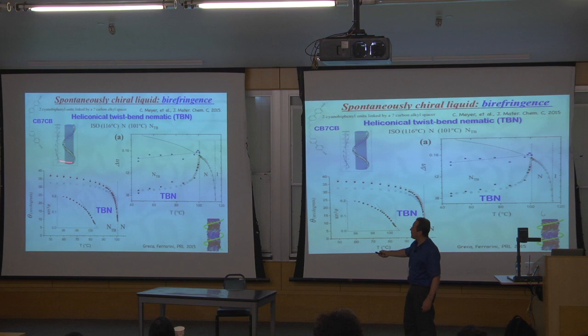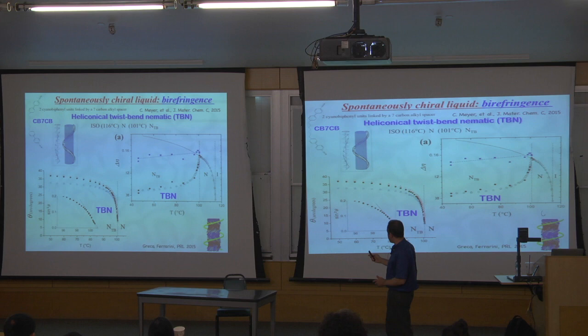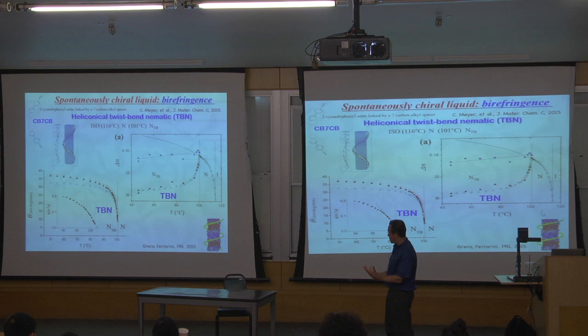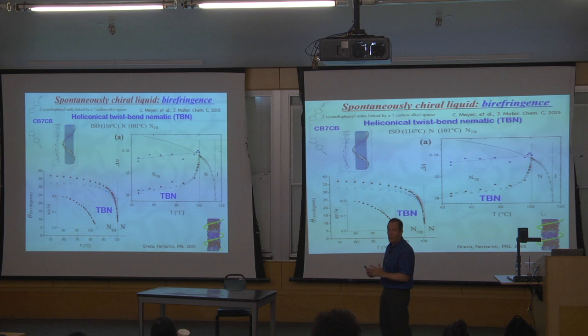The structure you decipher from this looks like a helix, with about an 8-nanometer period or pitch. You can also extract information from birefringence measurements. In the nematic phase, the index of refraction along one axis is different from the other two — the birefringence order parameter grows as molecules become more and more aligned. But then when you get to this magical transition temperature of 101 degrees Celsius, the birefringence starts going down.